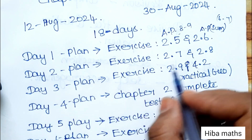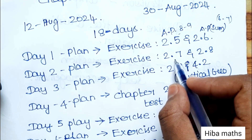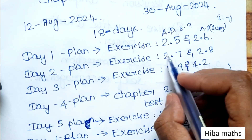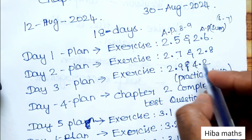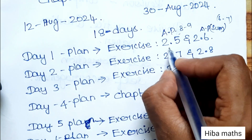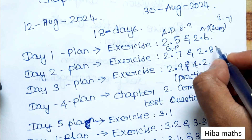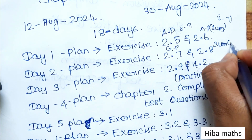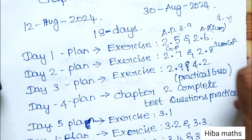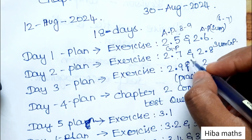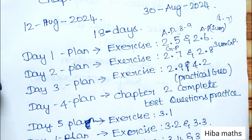Day 2 is exercises 2.7 and 2.8. Exercise 2.7 is Geometric Progression (GP), and 2.8 is the sum of GP. So exercises 2.5 and 2.6 are AP, and 2.7 and 2.8 are GP.